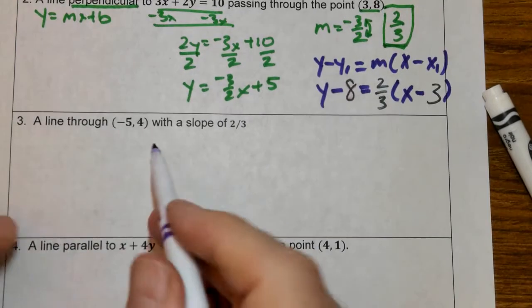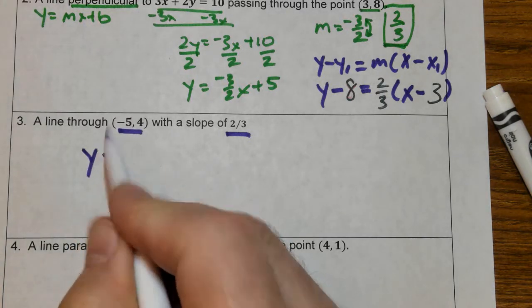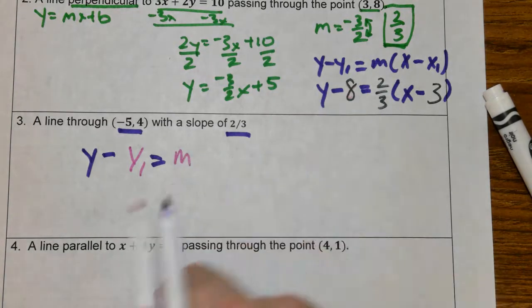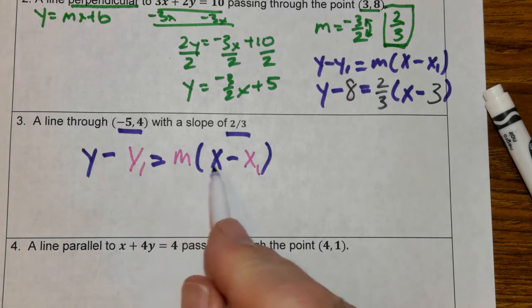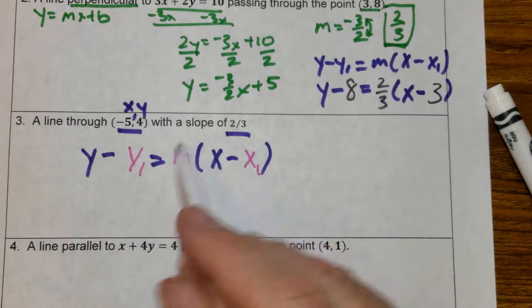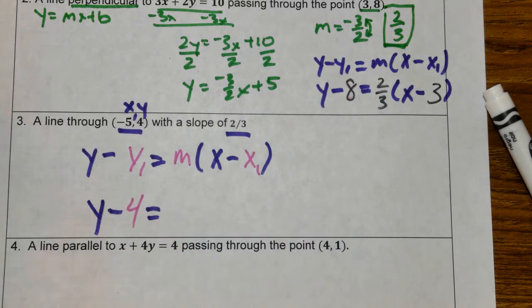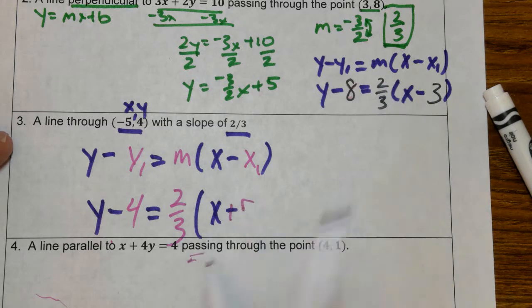For number 3, I have a line through point negative 5, 4 with slope 2 thirds. Using point-slope form: y minus y1 equals m times x minus x1. Plugging in: y minus 4 equals 2 thirds times x minus negative 5, which is x plus 5. That's our answer.